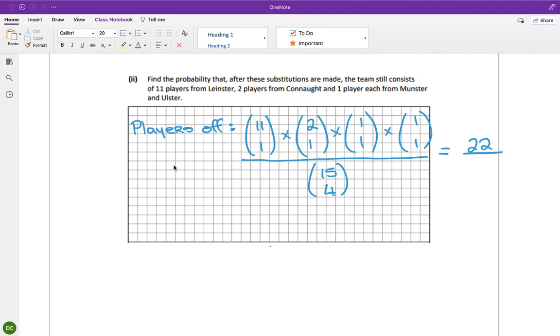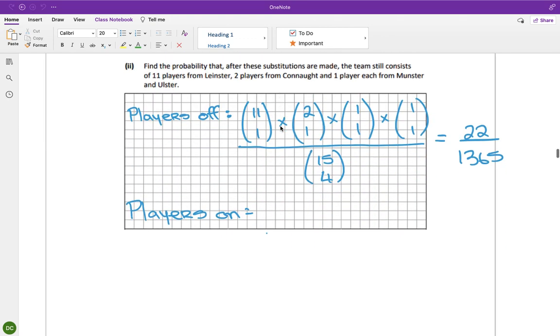And 15 choose 4 is 1,365. That doesn't simplify. So that's 22 over 1,365. The players that are coming on are the one from each team, which we calculated up here. So 4 over 35. So we want the players to go off and the players to come on. So do we just multiply? So that by 4 over 35. So I'm getting 88 over 47,775 players on and players off. So multiply.